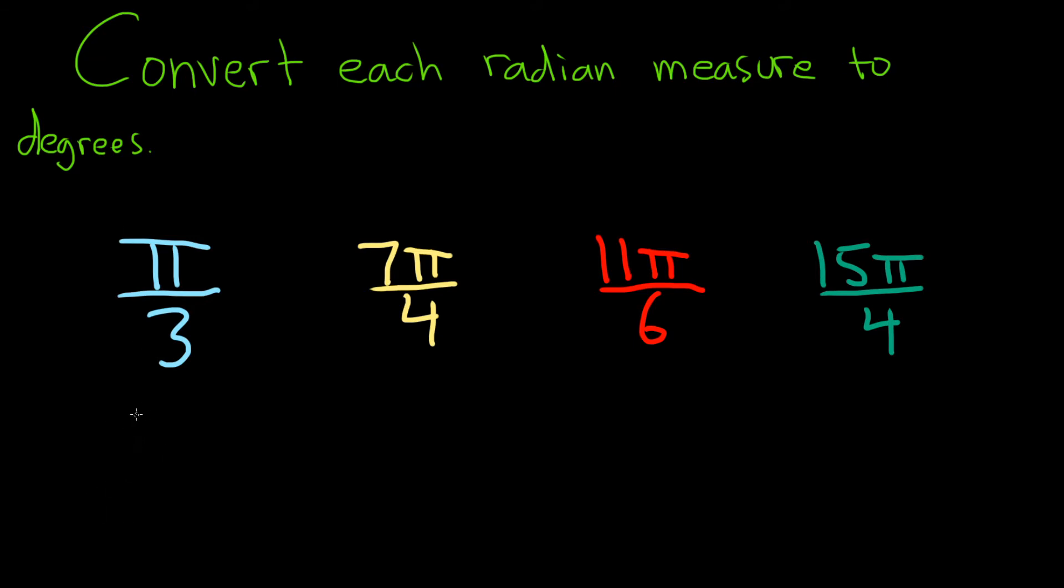We take pi over 3 and multiply by 180 degrees over pi. The pi's cancel. 3 goes into 180 60 times, so we get 60 degrees. That would be the first answer there.